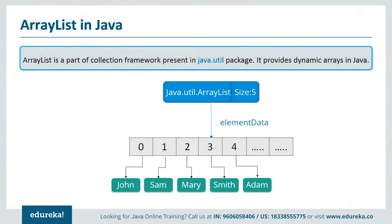Now let's see what ArrayList is. ArrayList is a part of the collections framework and is the implementation of the List interface, where elements can be dynamically added or removed from the list. Also, the size of the list is increased dynamically if elements are added beyond the initial size. Though it may be slower than standard arrays, it can be very helpful in programs where lots of manipulation in the array is required.